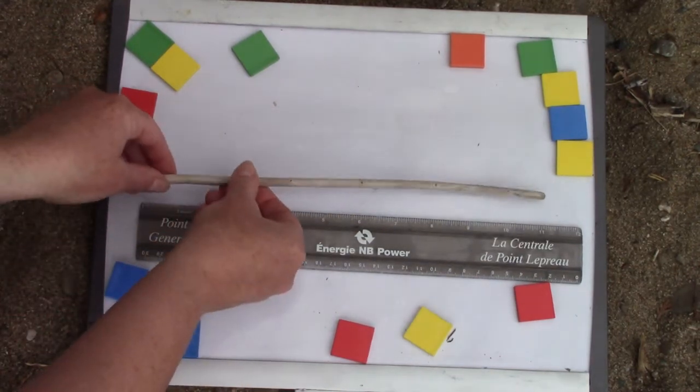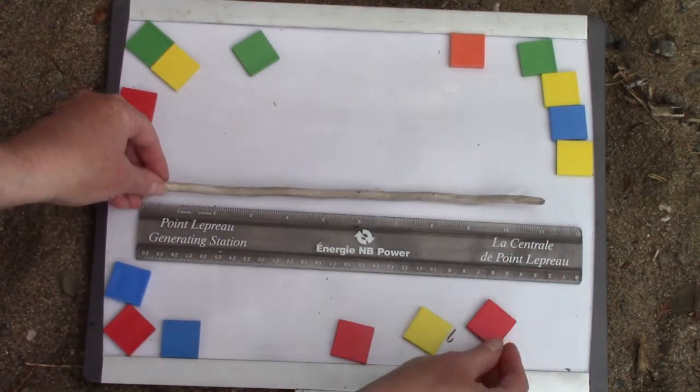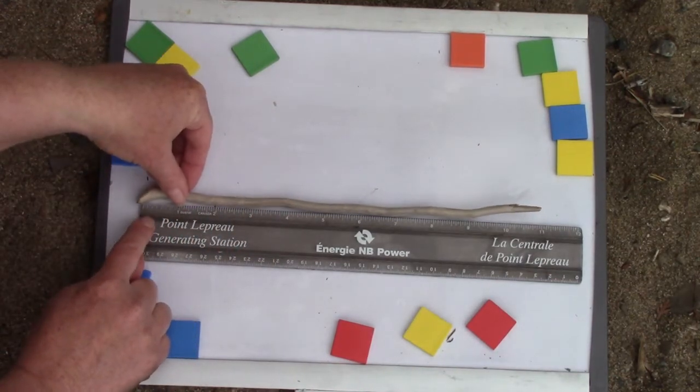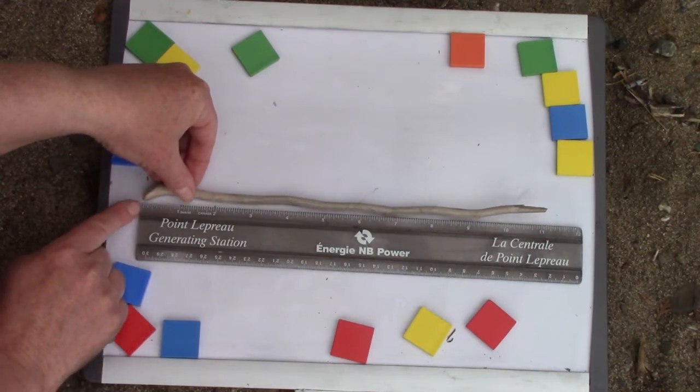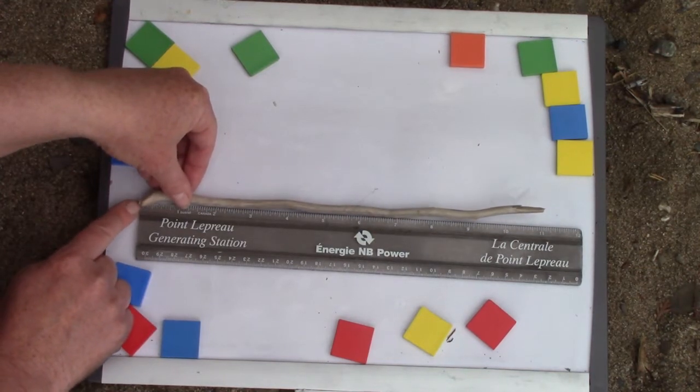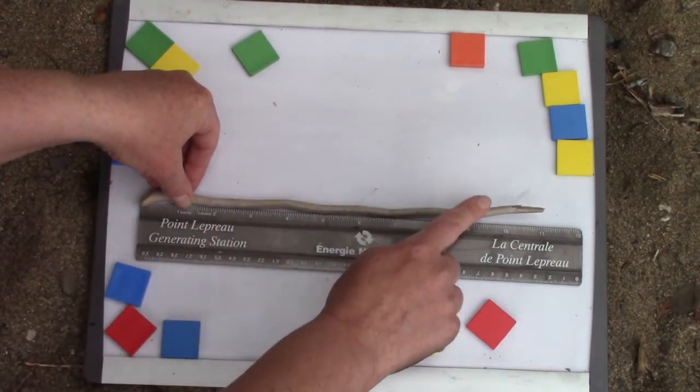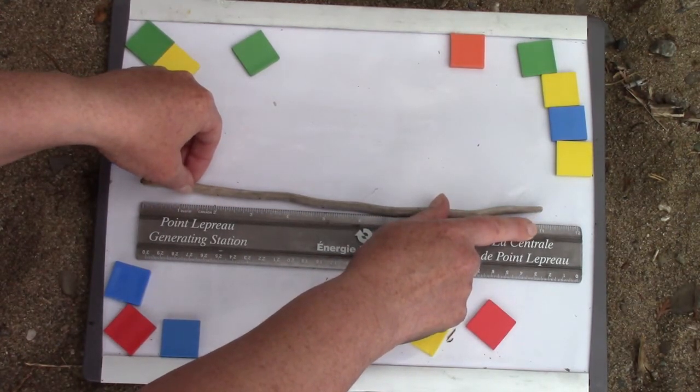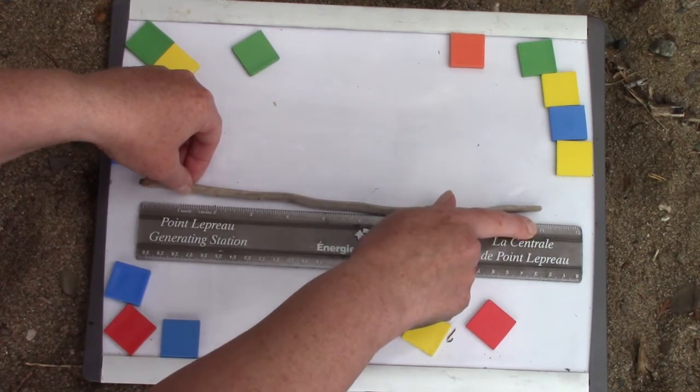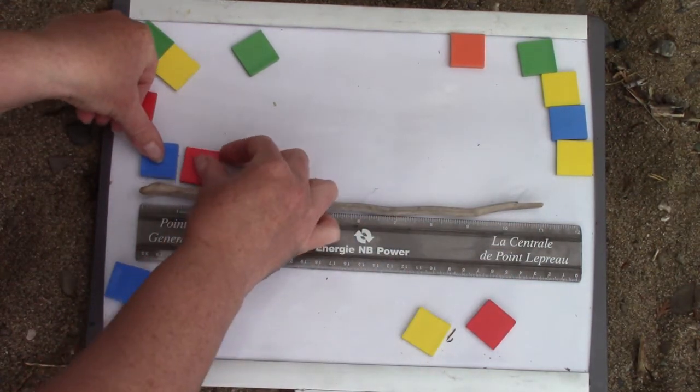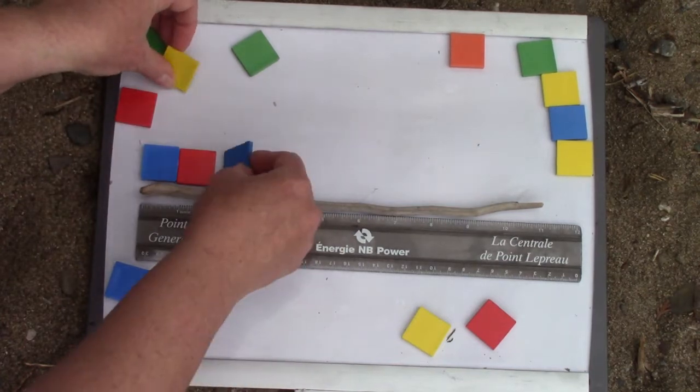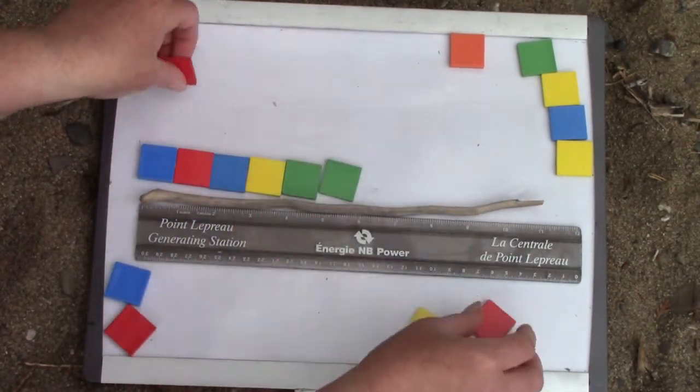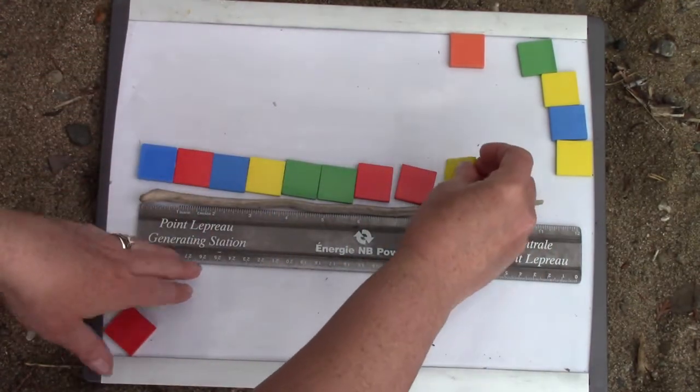We're going to measure some things that we measured before with our tiles but this time we're going to measure it with inches. When we measure we make sure that the end of our item starts right at the zero and then we measure all the way along and we find the closest inch. This is 11 inches. Do you remember before when we measured it? We measured it with our tiles and we found out that it was, well I'm not going to tell you how many tiles it was long.